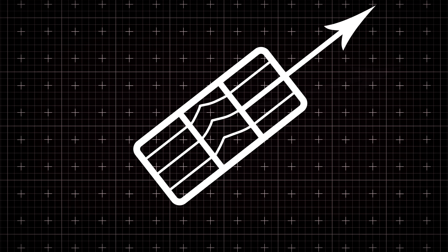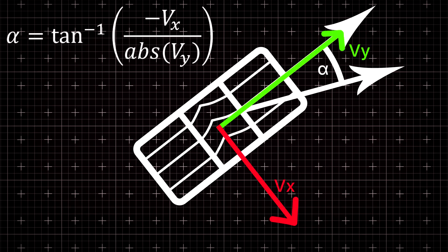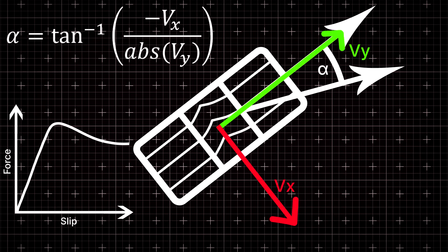With lateral motion it's mostly the same, but this time we have a difference in heading direction between the wheel and contact patch, denoted by an angle called the slip angle. Once again, the relationship between slip and generated force remains relatively linear up until a peak, after which the force falls off asymptotically. Let's take this concept and model it in our simulation.